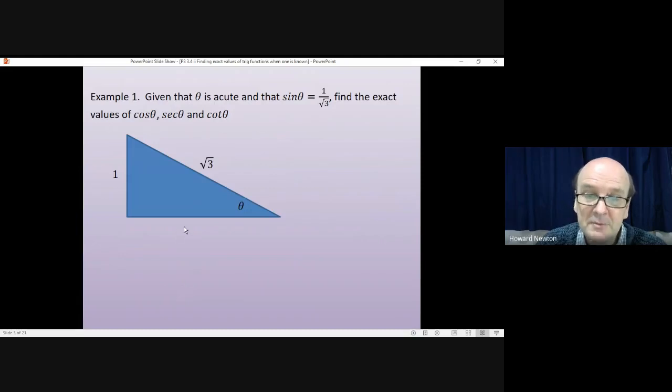Then we can work out the third side using Pythagoras. Root 3 squared is 3. 3 minus 1 squared is 2. So the third side will be the square root of 2. Once you know all three sides, you can find absolutely anything they ask you. They ask us to find the cosine of theta.